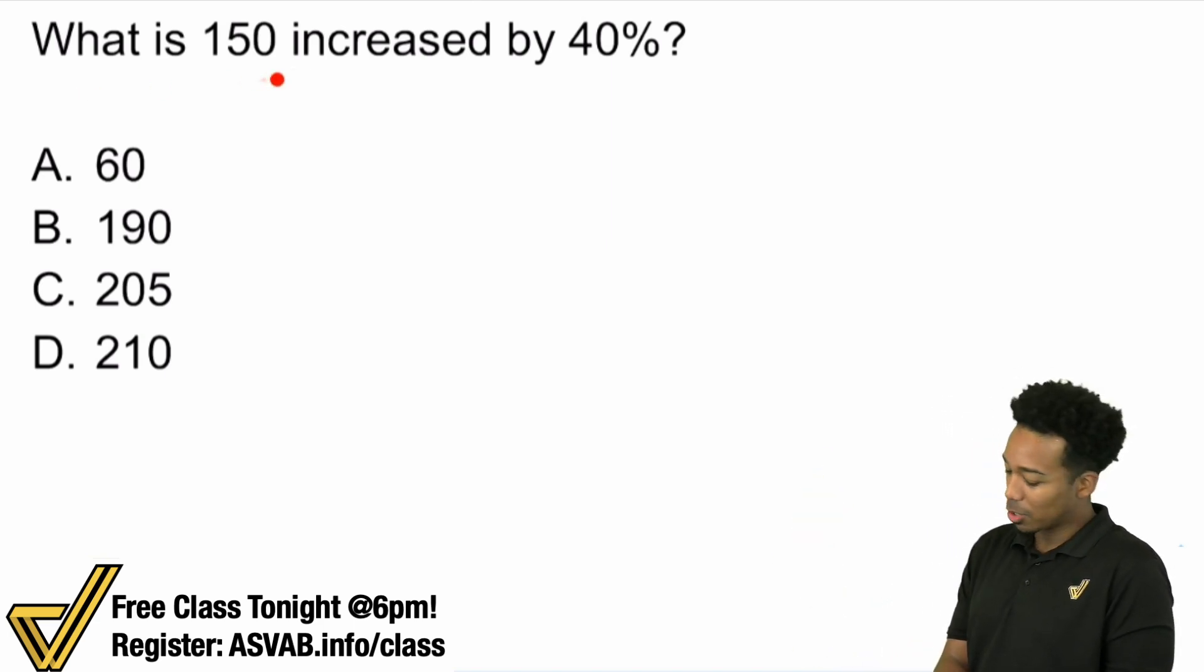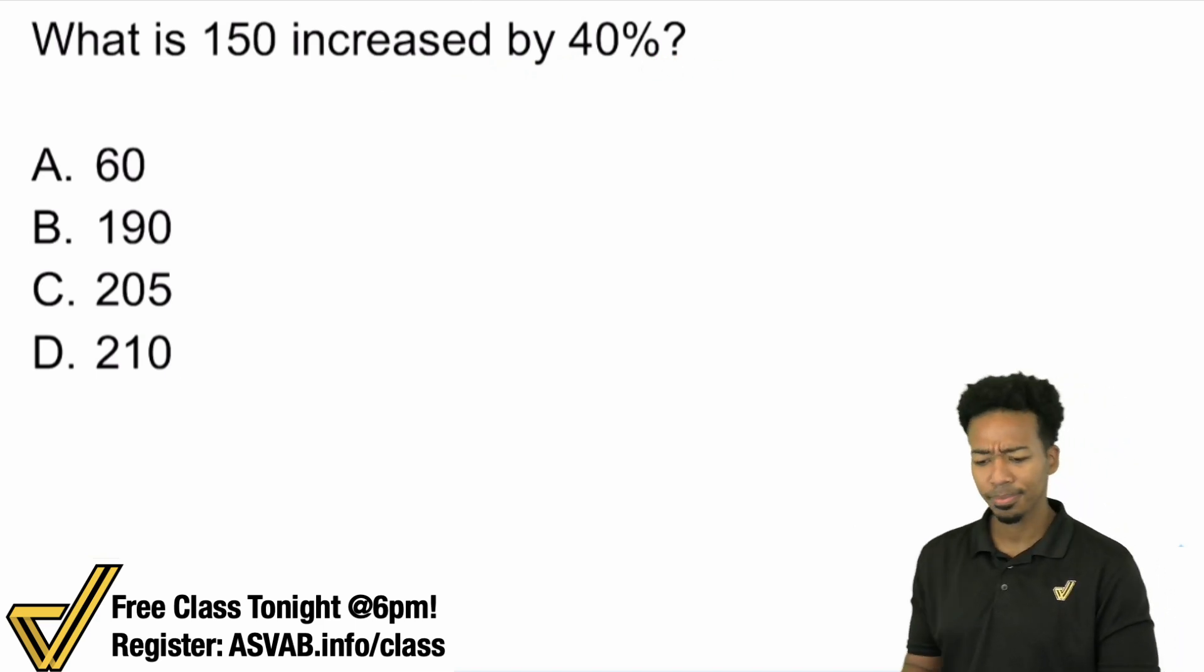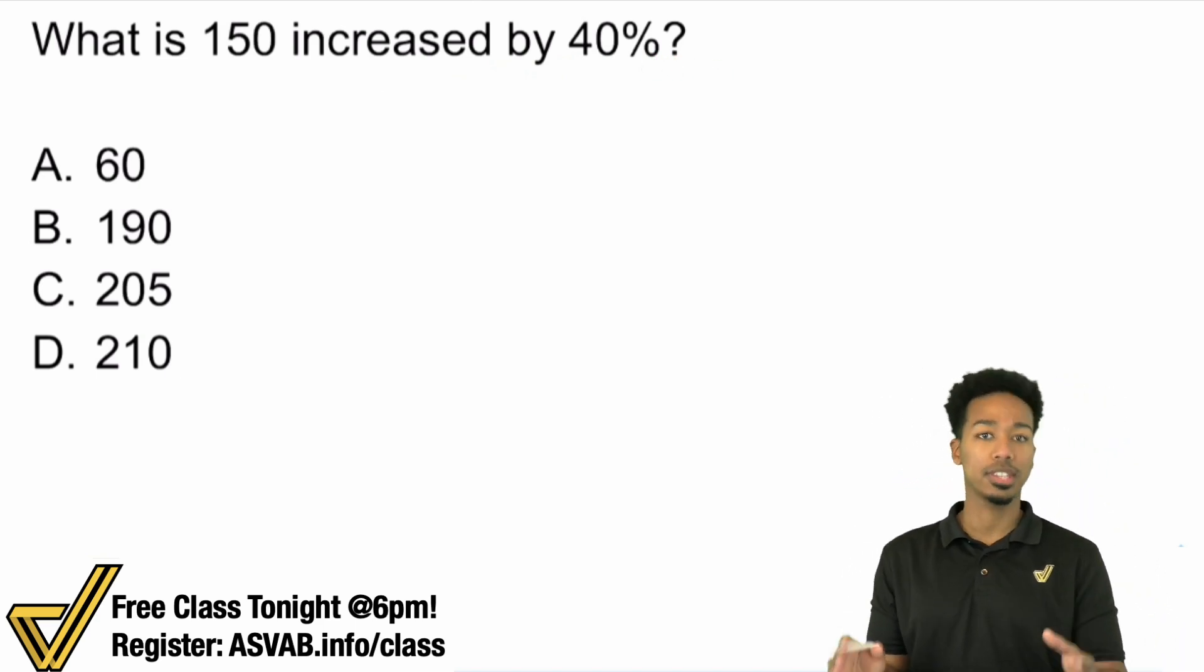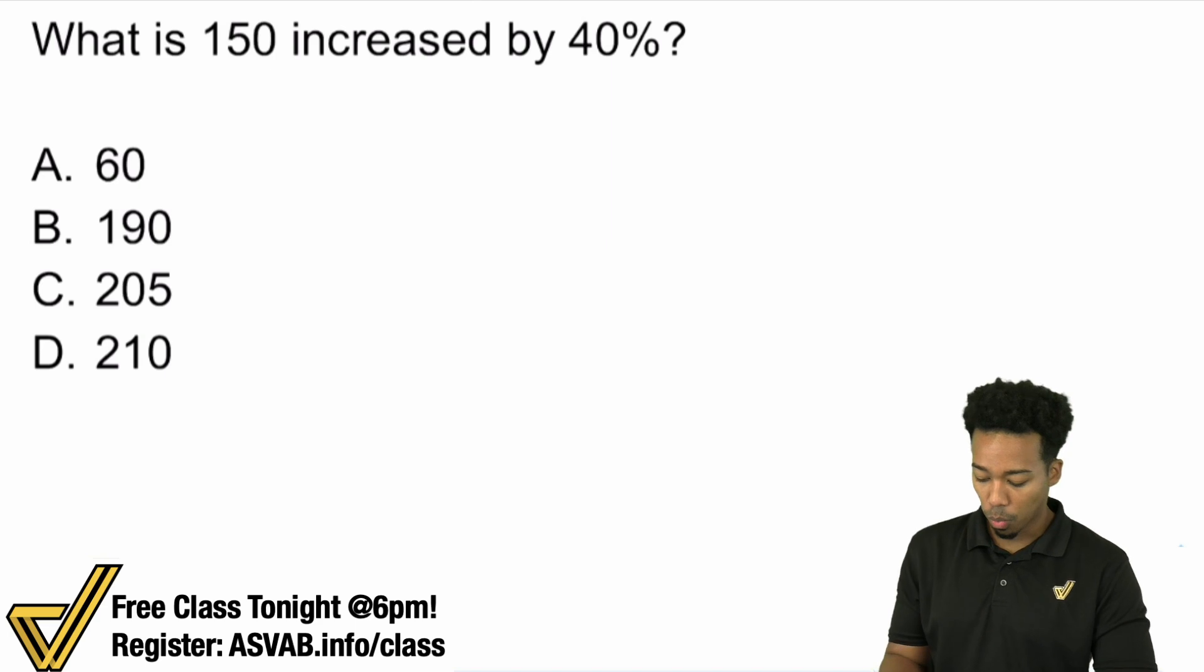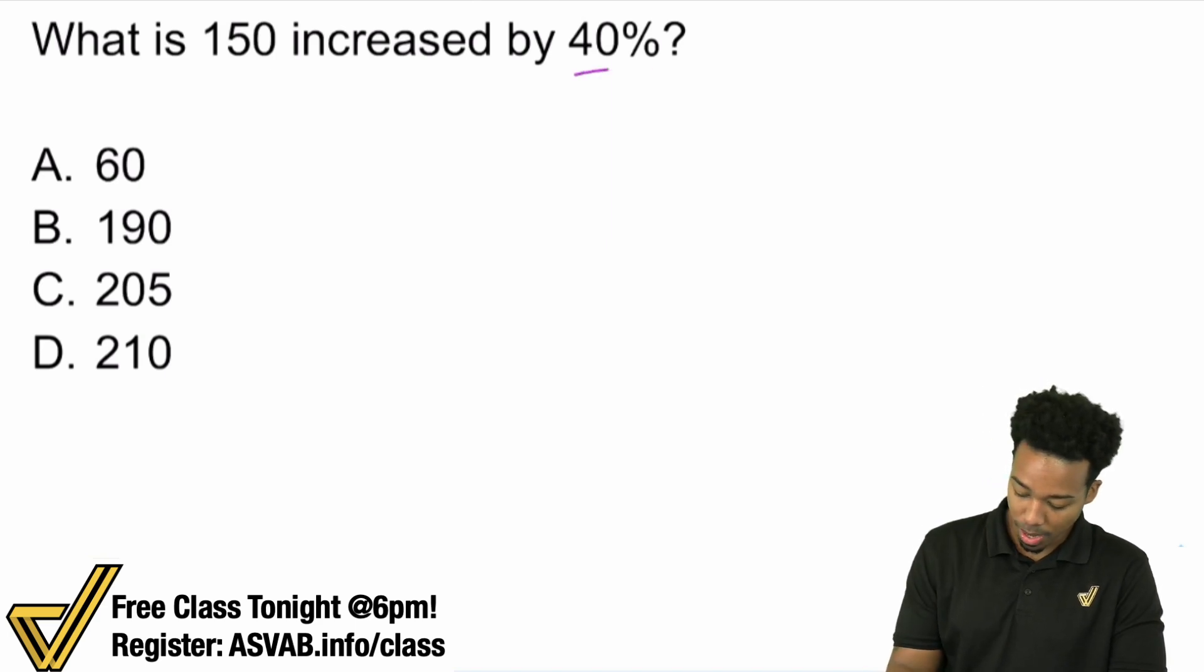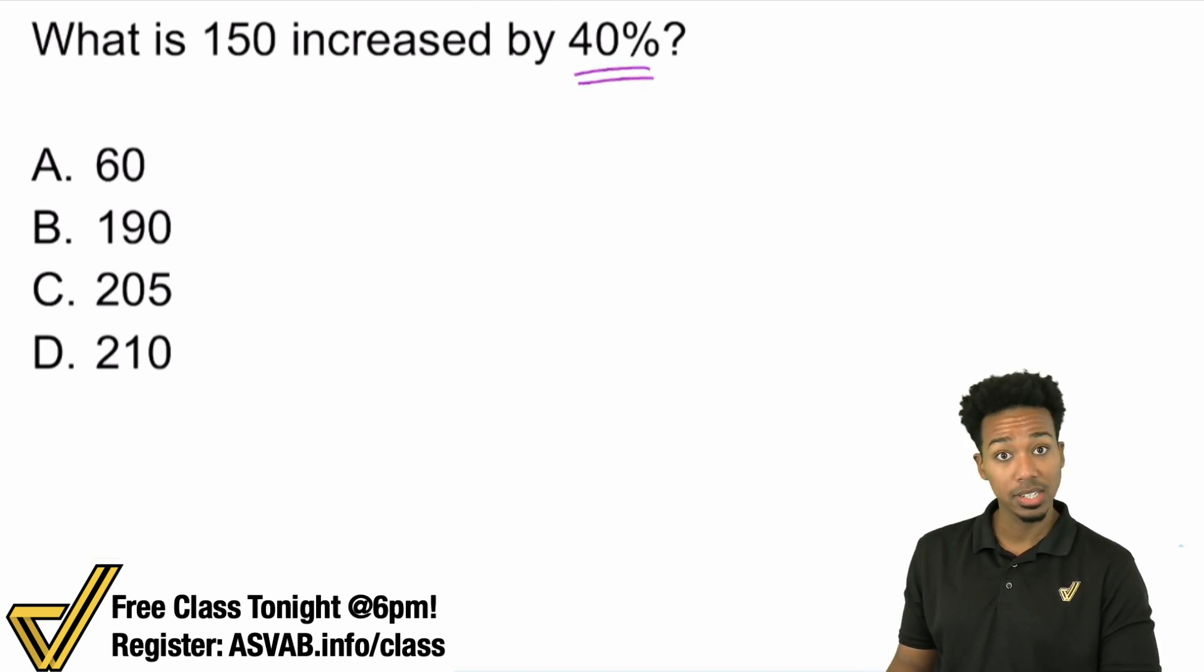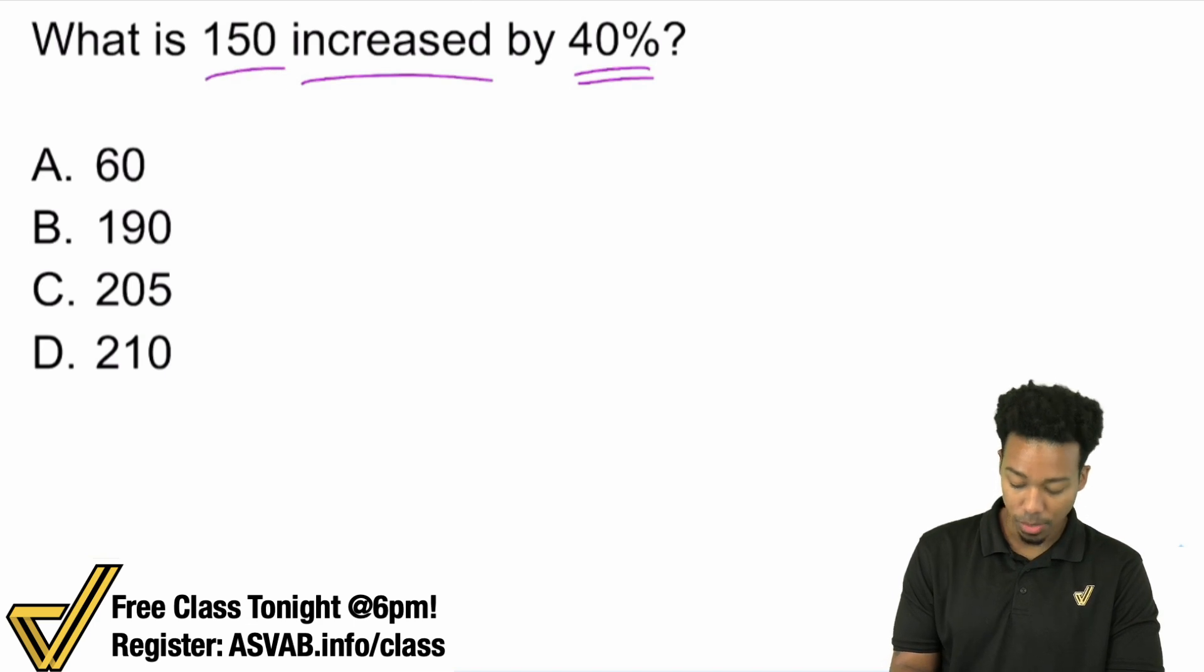So we have what is 150 decreased by 40%. Okay, how do we get this done? Well, here's the thing. There are two main ways to get this done. One of them is actually a lot faster than the other. So one way to do this is to figure out what 40% is and then increase 150 by it. That's one way to do it.